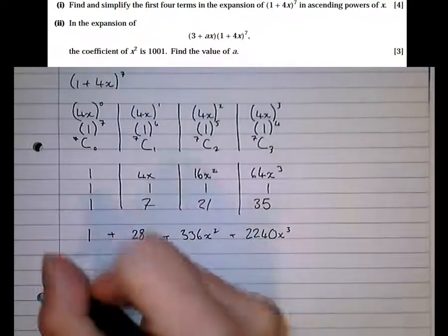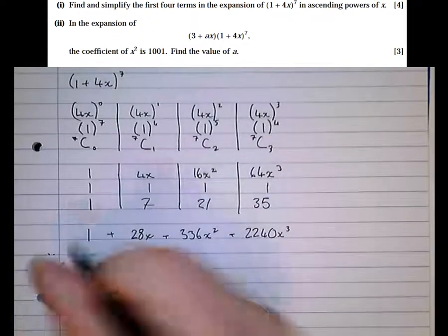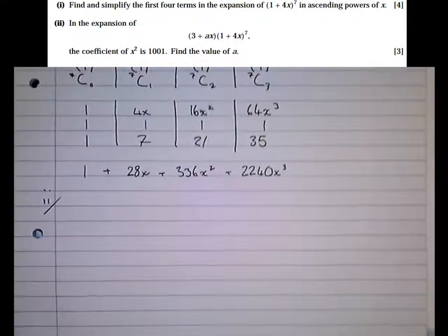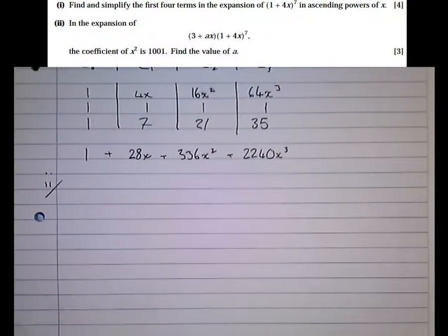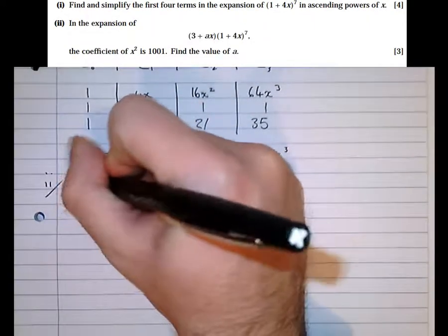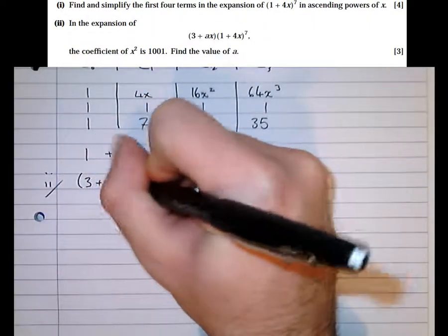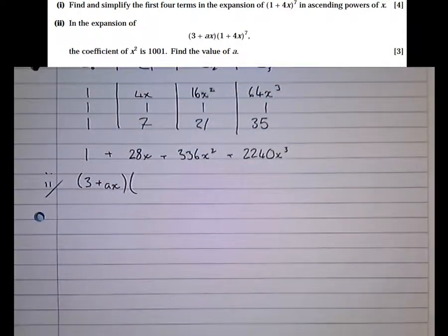The next part, part 2, is slightly more difficult. It tells us that in the expansion of (3 plus ax)(1 plus 4x) to the power of 7. Now what we've got to notice here is 1 plus 4x to the power of 7 is what we expanded in the first part. So we've already done some of the work on this. And that's quite often the case in these multi-part questions.